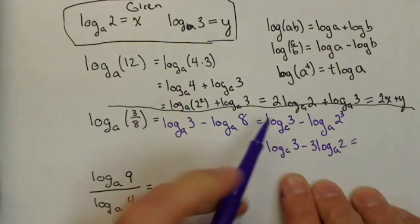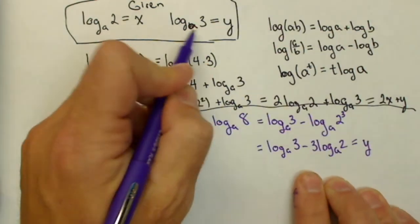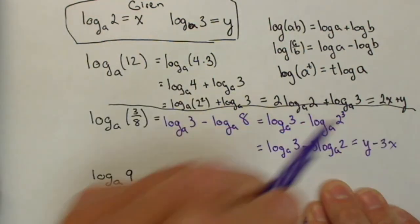So in terms of x and y, remember this is y, I can rewrite this as y minus 3 times x.